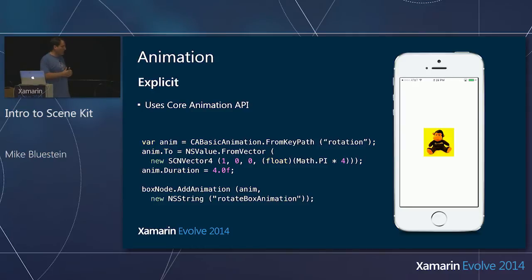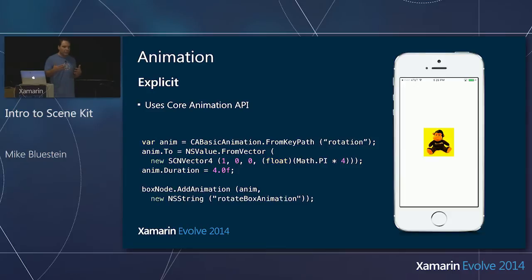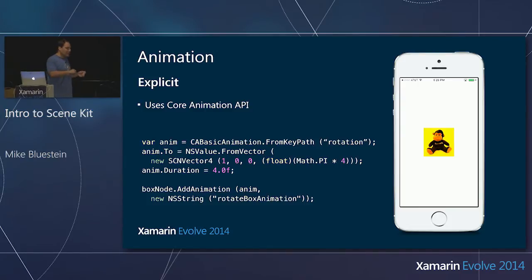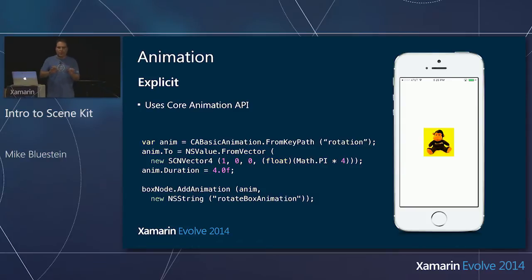Now, what if you're making a game? Core Animation is wonderful but it's really designed as a programming model for apps — I'm distinguishing apps from games. In an app you might have things sliding in with subtle animations. In a game you're animating all the time, and it would be a bit laborious to work with Core Animation for all of that.